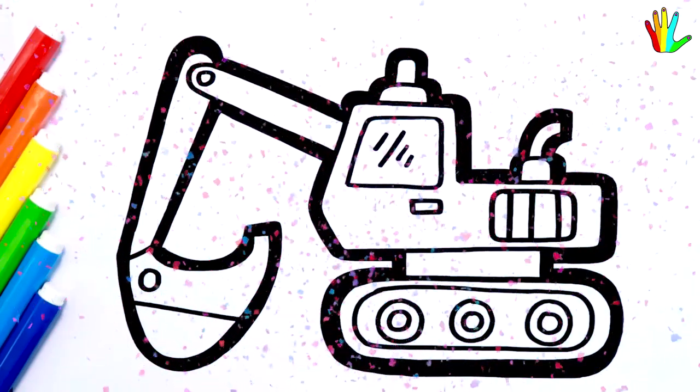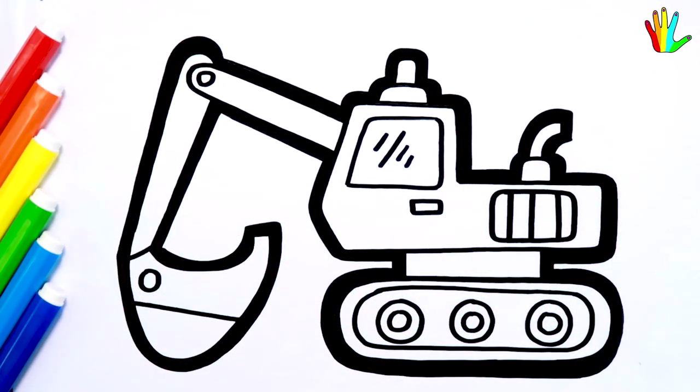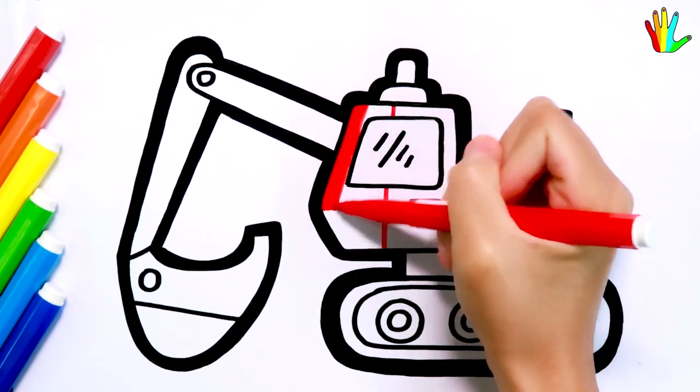And now for coloring. For coloring I'm going to use the colors of the rainbow. I'm going to start with red here, like this.